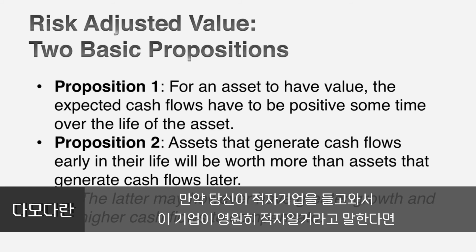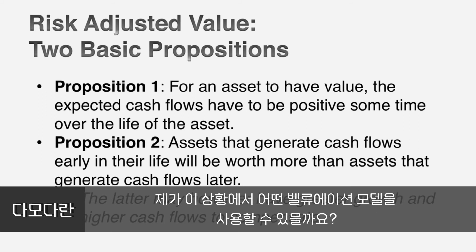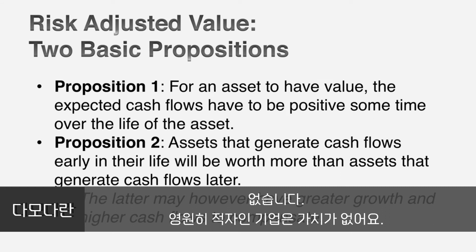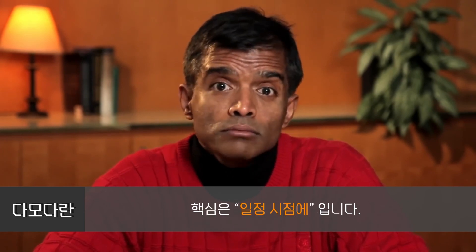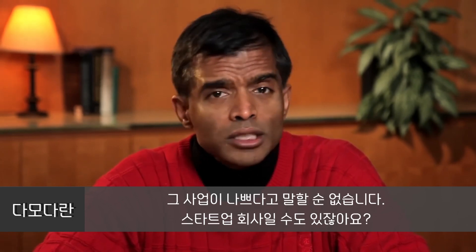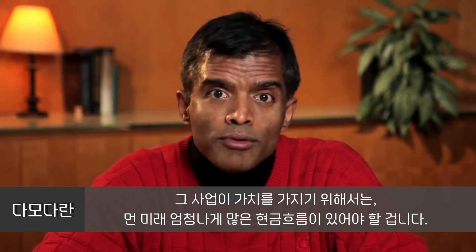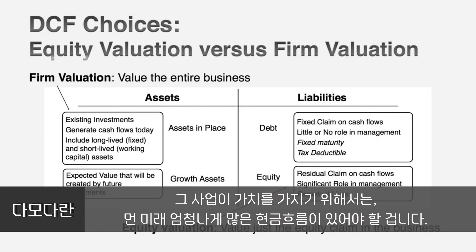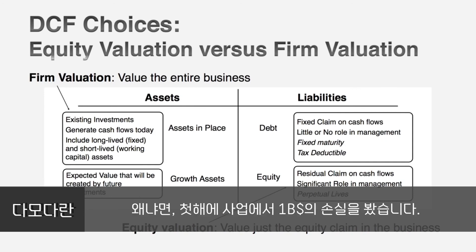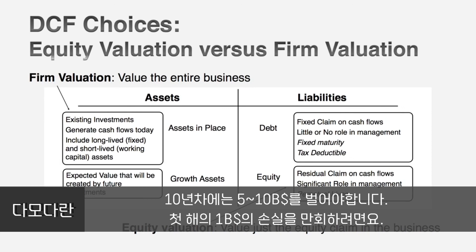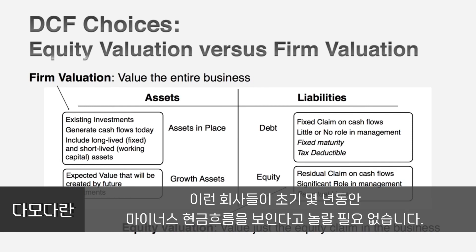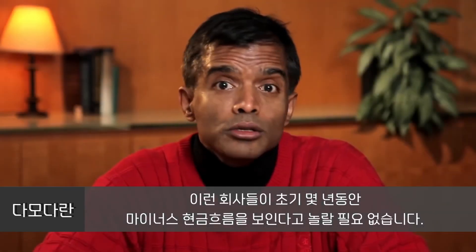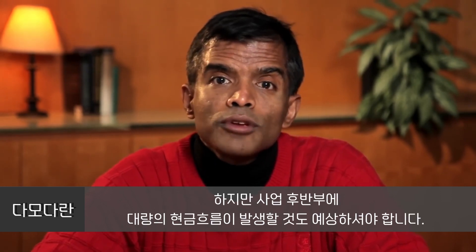So if you come to me with a company that's losing money and you tell me it's expected to lose money forever, you know what valuation model you should use? None. That company is worth nothing to you. For a company to have value, its cash flows have to be positive at some point in time — the key phrase is 'some point in time.' If you have a business with negative cash flows up front, it doesn't have to be a bad business — it could be a young startup. For that business to have value, it has to have disproportionately large positive cash flows in the future. If you lose a billion dollars in year one, you better make five or ten billion in year ten to make up for it. So when you see young growth companies with negative cash flows in years one, two, three — that's okay, that's what you'd expect. But you should also expect to see very large positive cash flows down the road.